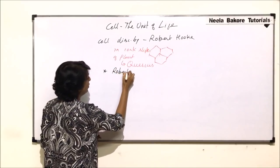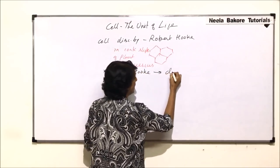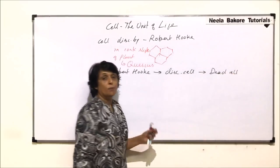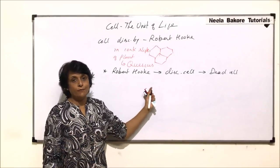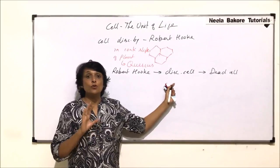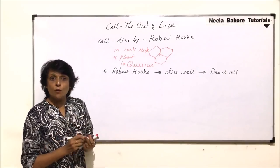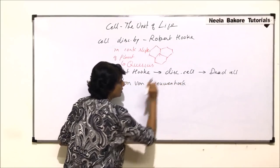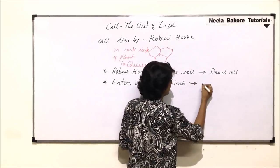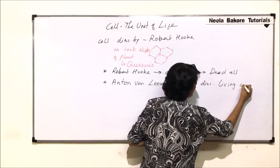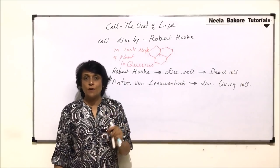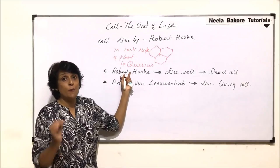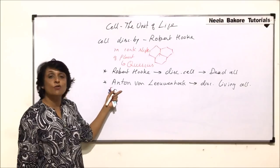So basically, he saw dead cells. Whenever we say who discovered the cell, the answer is Robert Hooke — but that cell was a dead cell. If the question asks who discovered the cell, we write Robert Hooke, because he was the one who saw the cell for the first time. But the living cell was observed by another scientist: Anton von Leeuwenhoek. So if the question is specifically about who observed the living cell for the first time, the answer is Anton von Leeuwenhoek.